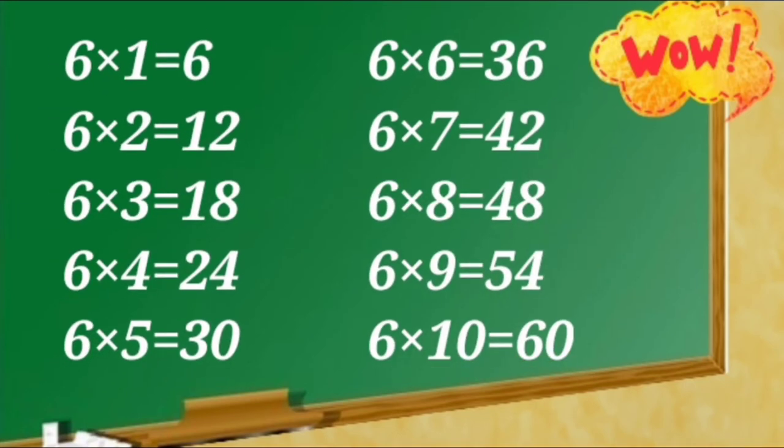6 ones are 6, 6 twos are 12, 6 threes are 18, 6 fours are 24, 6 fives are 30, 6 sixes are 36, 6 sevens are 42, 6 eights are 48, 6 nines are 54, 6 tens are 60.